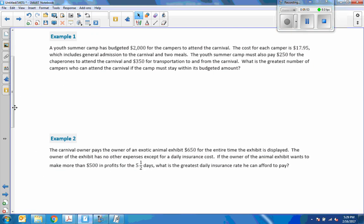For example, a youth summer camp. That's a budget of $2,000. For campers to attend a car cost of each camper. $17.95, which includes general admission to the carnival and 2 meals. So that's all included. The youth summer camp must also pay $250 for the chaperones. They're not volunteers. They're getting paid to attend and $350 for transportation to and from the carnival. So we have to rent a bus and pay for fuel. What is the greatest number of campers who can attend the carnival if the camp must stay within the budget without?